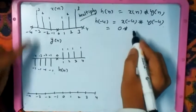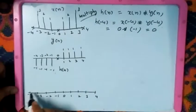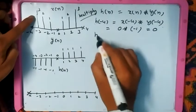At the position of -4, we have x of -4 as 0 multiplied with y of -4 which is -1. When you multiply with 0, the answer will be 0. Therefore, the output h of -4 is 0.